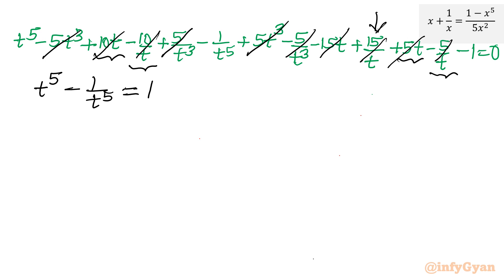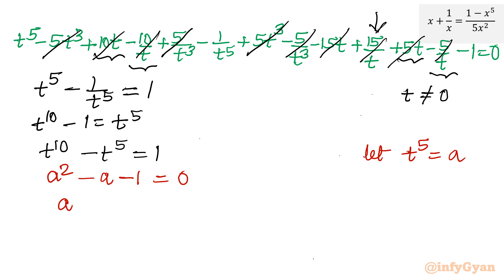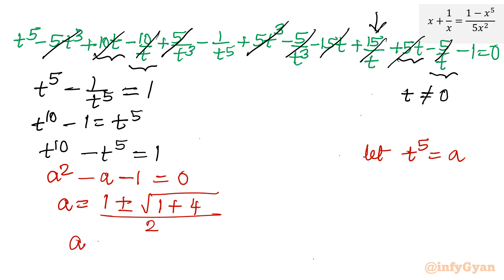Multiplying both sides by t⁵, presuming t is non-zero (since x is non-zero), gives t¹⁰ minus 1 equals t⁵, so t¹⁰ minus t⁵ minus 1 equals 0. Now let t⁵ equal a, giving a² minus a minus 1 equals 0. Applying the quadratic formula: a equals 1 plus or minus square root of 5, all over 2.